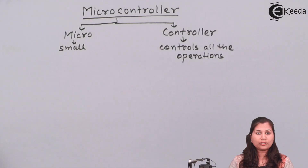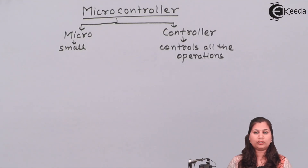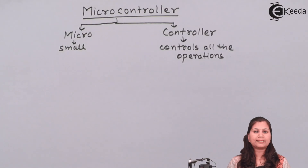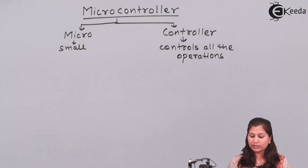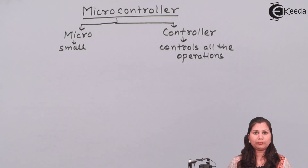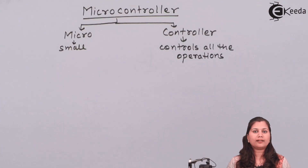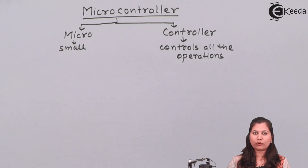Now a general microcontroller consists of various components like memory, which can be either RAM or ROM. RAM is the random access memory and ROM is the read only memory. This microcontroller can have memory, serial input/output ports, peripheral devices, and timers and counters.